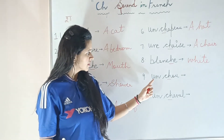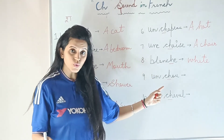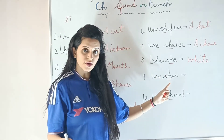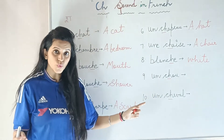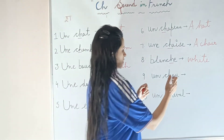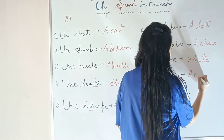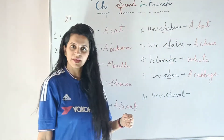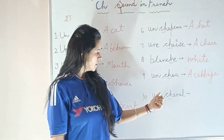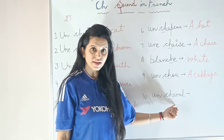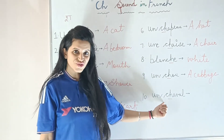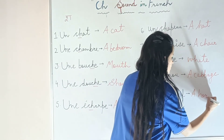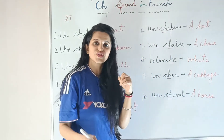The next word is 'Un chou'. The word means cabbage — chou is a cabbage. The last word that we have is 'Un cheval'. Un cheval. Cheval is a horse. Un cheval.